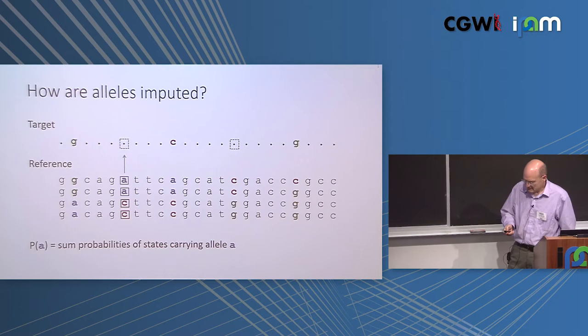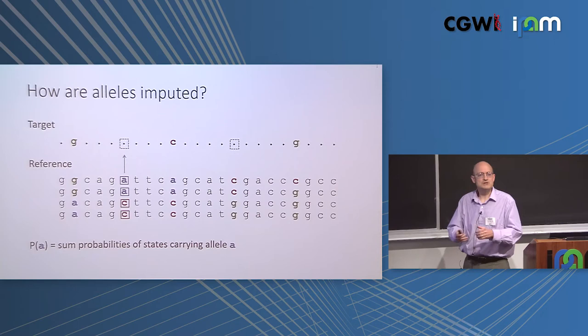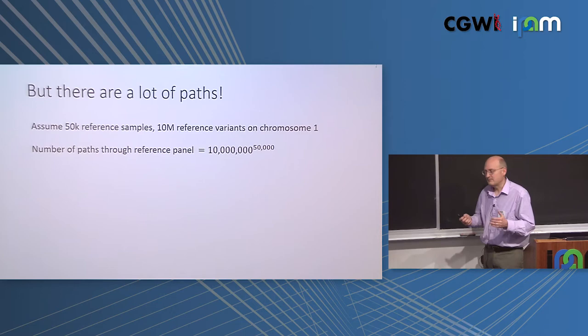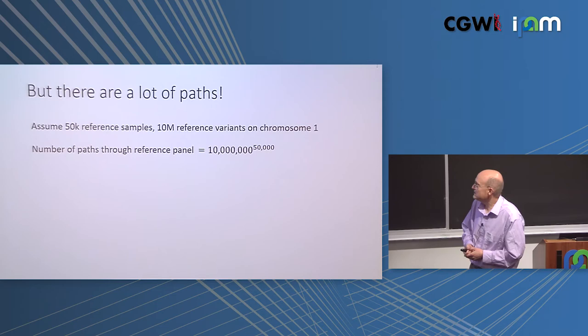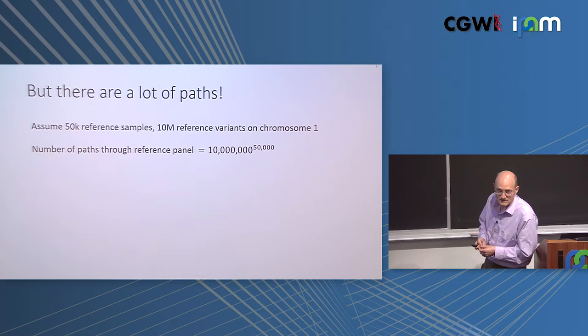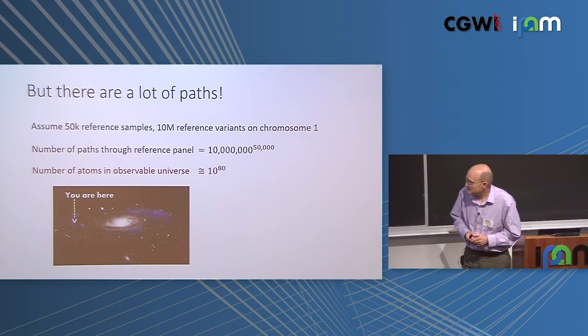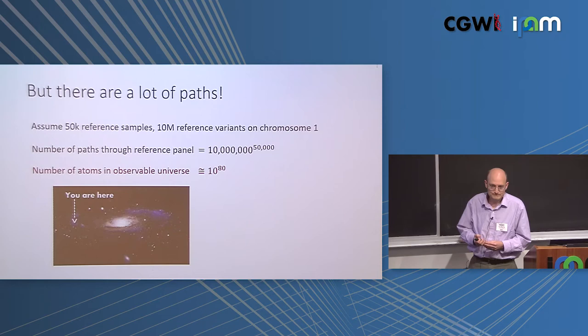Conceptually this is a very elegant, straightforward high-level view of the problem. But there's a little wrinkle: there are a lot of paths. Current state-of-the-art is about 50,000 reference samples and 10 million variants on chromosome one. The number of paths is 10 million to the 50,000th power — which is terrifying. For perspective, the number of atoms in the observable universe is estimated to be 10 to the 80th. So this looks like a non-starter.